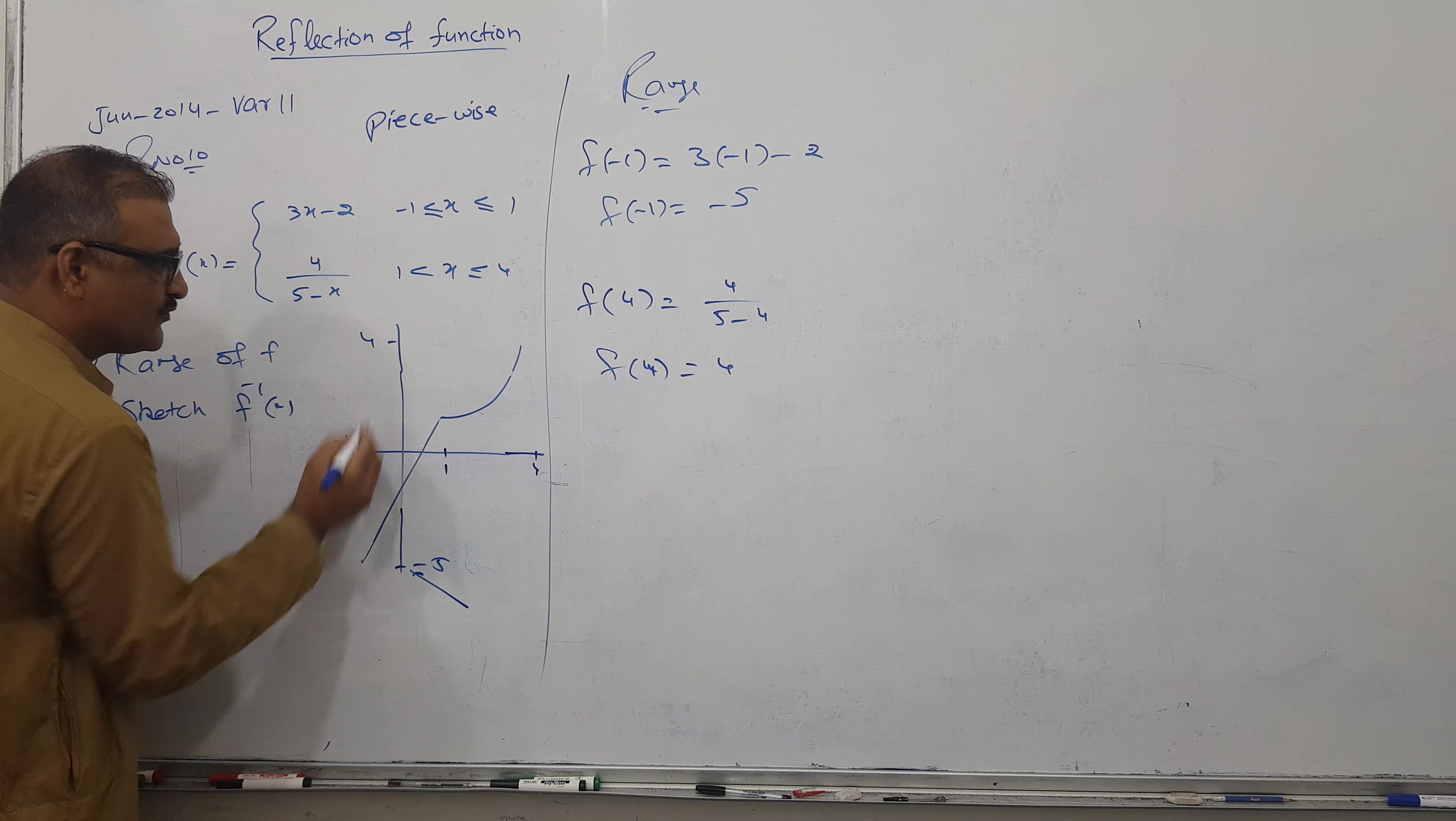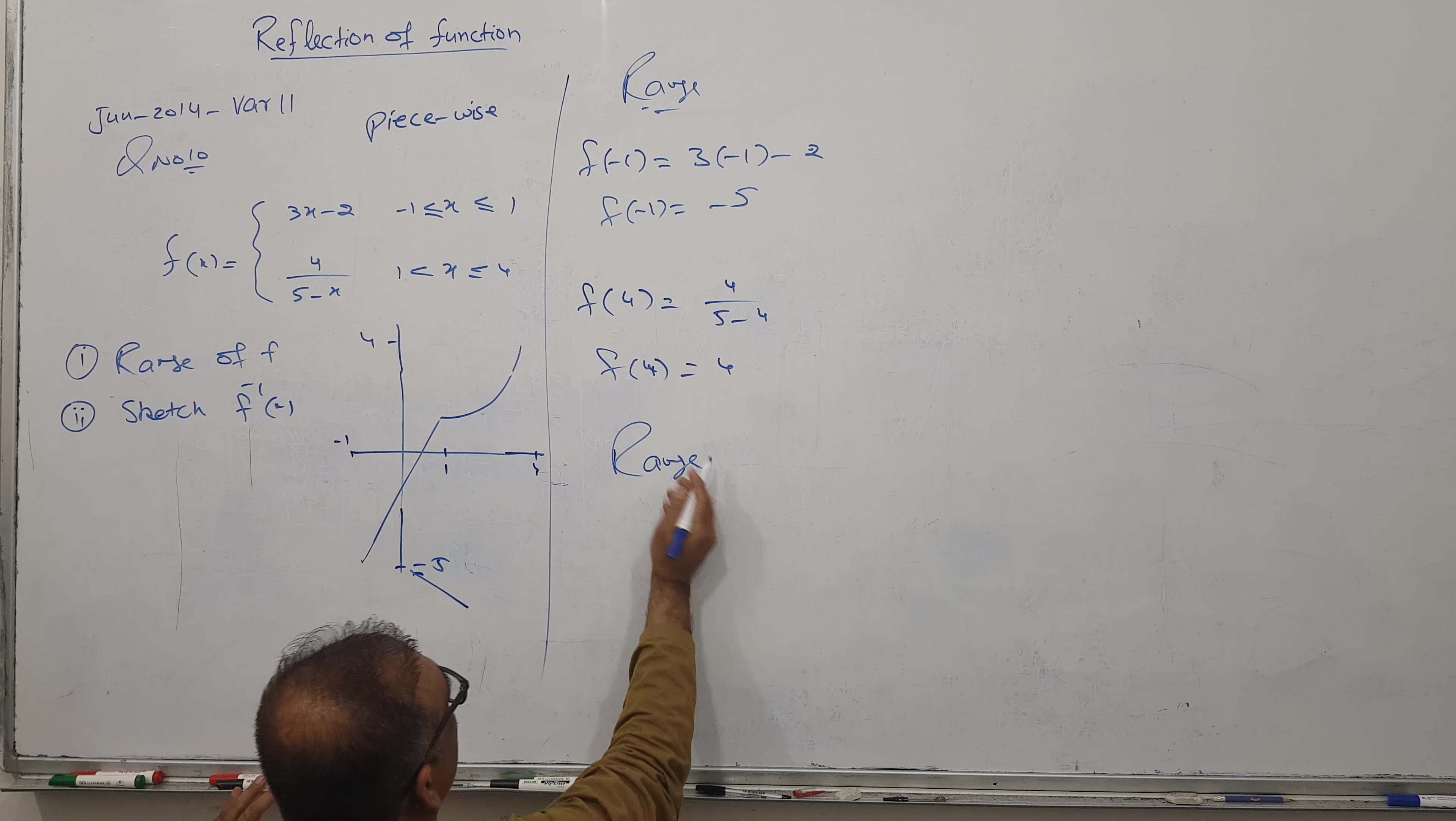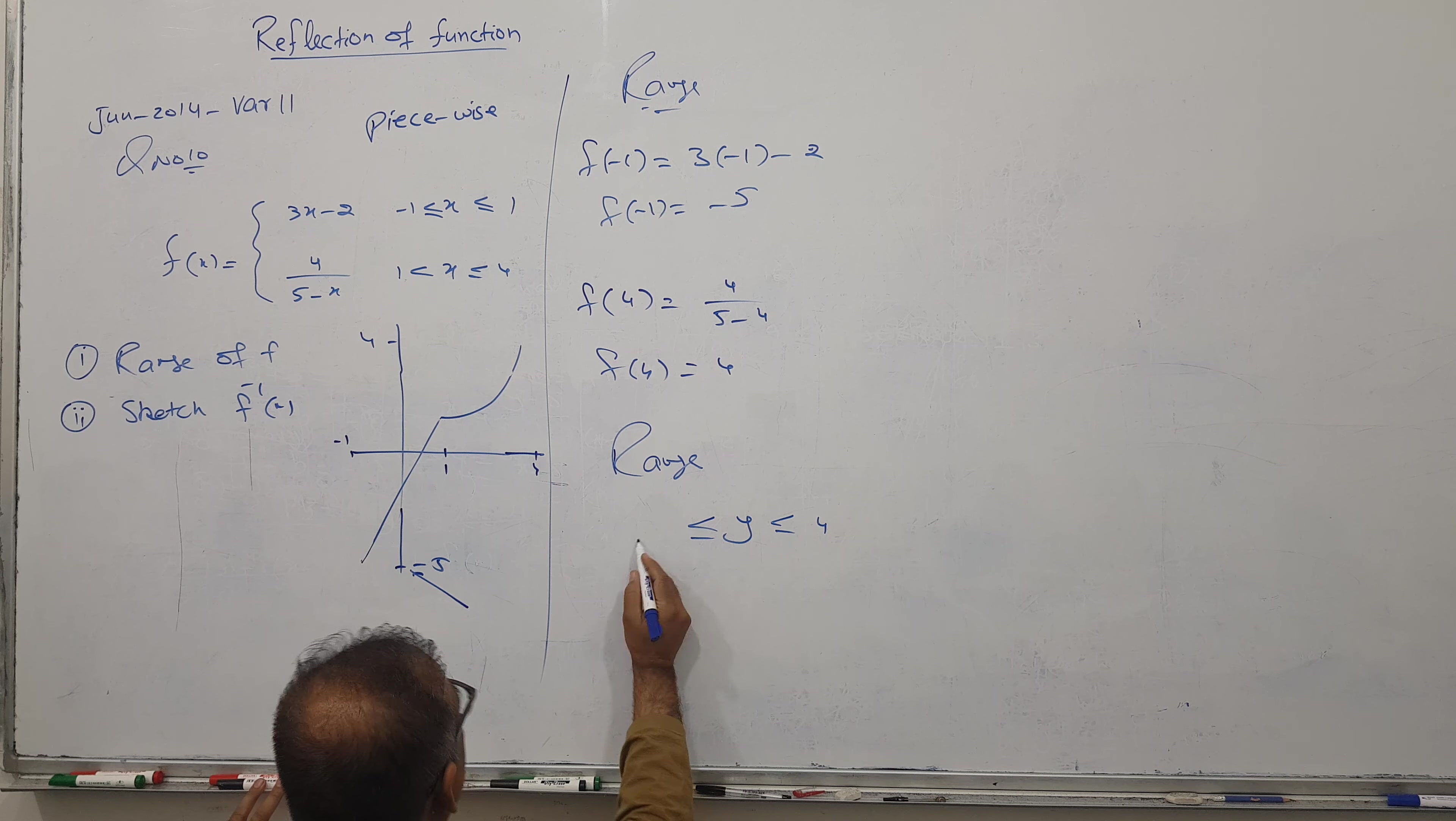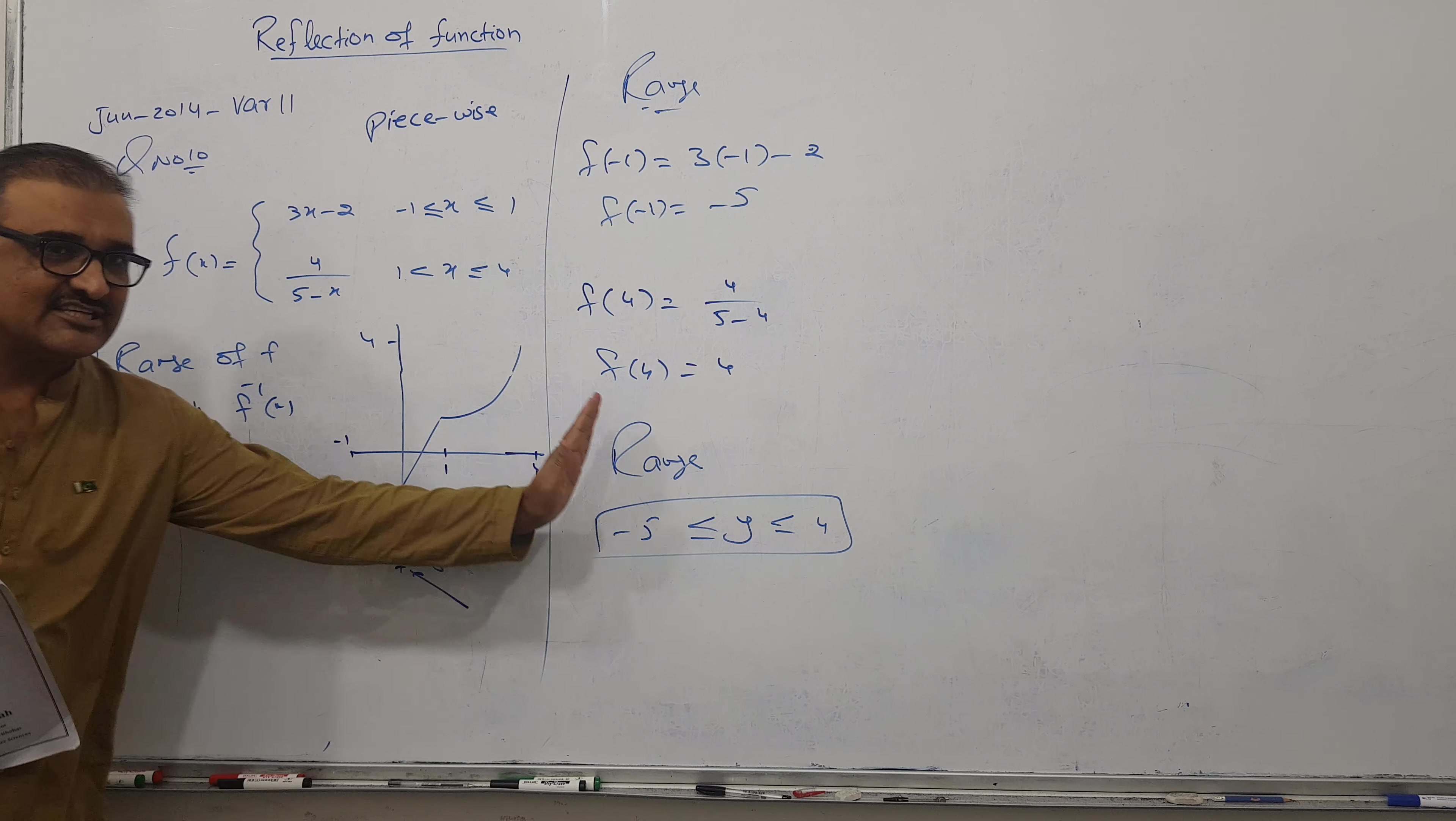The range is starting from minus five, ending at four. So range is simple. The highest value of y is four and the lowest value is minus five. This part is very clear. This is called domain, this is called range.